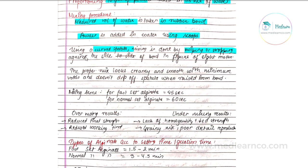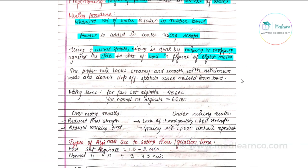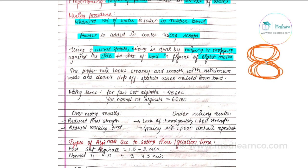Mixing is done using a curved spatula by sweeping or stropping against the side of the bowl in a figure-of-8 motion. The proper mix looks creamy and smooth with minimum voids and does not drip off the spatula when raised from the bowl — the right consistency should be creamy and smooth.